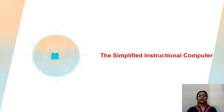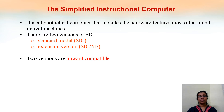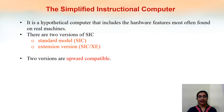In order to study system software, we will consider a simplified instructional computer. To learn system software, we have to consider a system — here, a processor. Nowadays we use the latest processors like Intel or AMD, but we cannot learn system software using those because they are very complex. So we will use a hypothetical processor, which is SIC — Simplified Instructional Computer — which has fewer instructions and is simplified. It is not a real one.